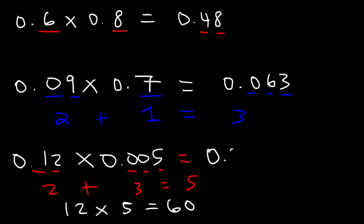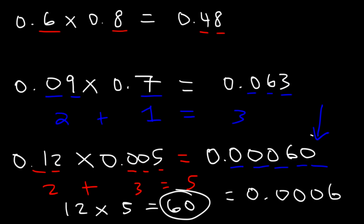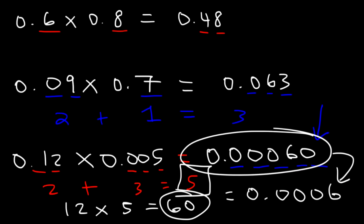So this is going to be 0.00060. Make sure you have the extra 0 to the right of the 60 for this to work — notice that we have a total of five digits. Now, if you have a 0 at the end, you really don't need to write it, so you need to understand that this is equivalent to 0.0006. It's the same. But first you want to write it this way using the same rules, and then you can just rewrite it. If you type it in your calculator, your calculator is going to show this answer.